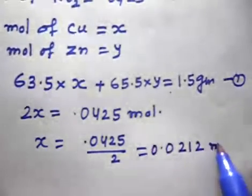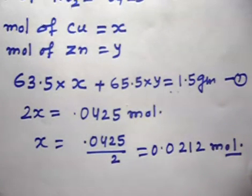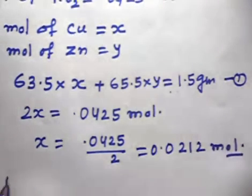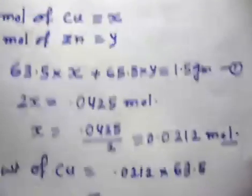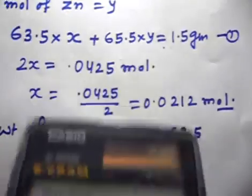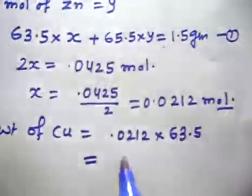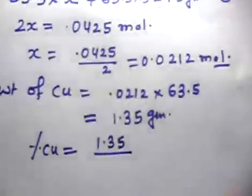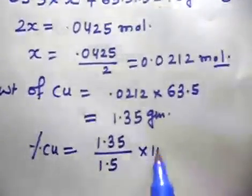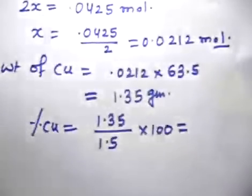Now we can find the percentage composition. Weight of copper = 0.02125 × 63.5 = 1.35 grams. Percentage of copper = (1.35 / 1.5) × 100 = 90%. So the brass alloy is approximately 90% copper.